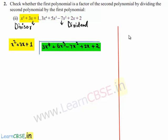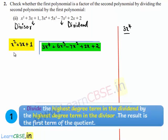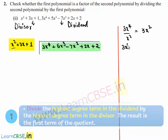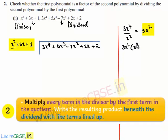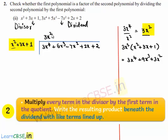The highest degree term of the dividend is 3x⁴ and the highest degree term of the divisor is x². On dividing them we get 3x². So 3x² multiplied by the divisor x² plus 3x plus 1 gives 3x⁴ plus 9x³ plus 3x². So 3x² can be written at the place of the quotient, and this product, 3x⁴ plus 9x³ plus 3x², is written here.